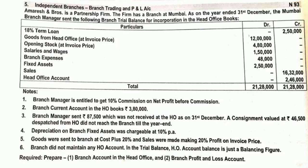Some adjustments are given. The branch manager is entitled to commission at 10% on net profit before commission. If it is net profit before commission, we have to deduct all expenses except commission from the net profit we have derived, and on that balance we calculate commission at 10 by 100.